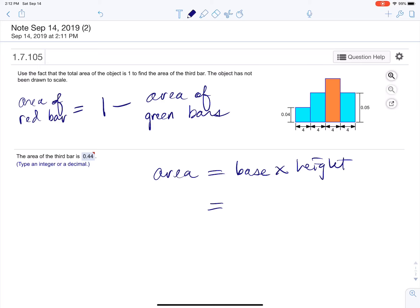The total area is going to be 0.04 times 4, that's the first one, plus 0.05 times 4. That's the second bar. And actually there's three, there's two of those, there's this one and this one, so I'm just going to multiply that times two.